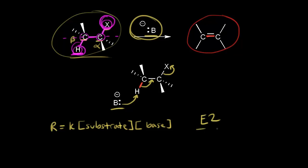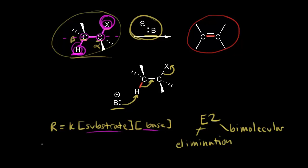The E stands for elimination — this is an elimination reaction. And the two is because this mechanism is bimolecular, meaning it's dependent on the concentration of two things: the concentration of the substrate and the base. So let's say you increase the concentration of your substrate, which is your alkyl halide, by a factor of two.